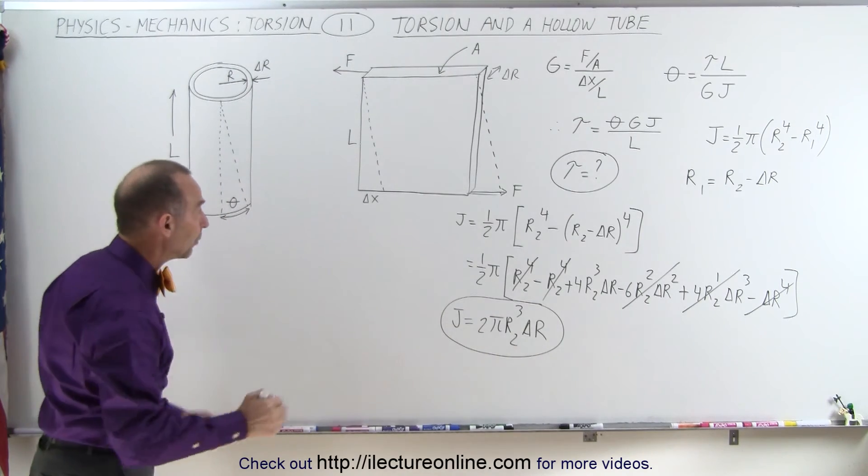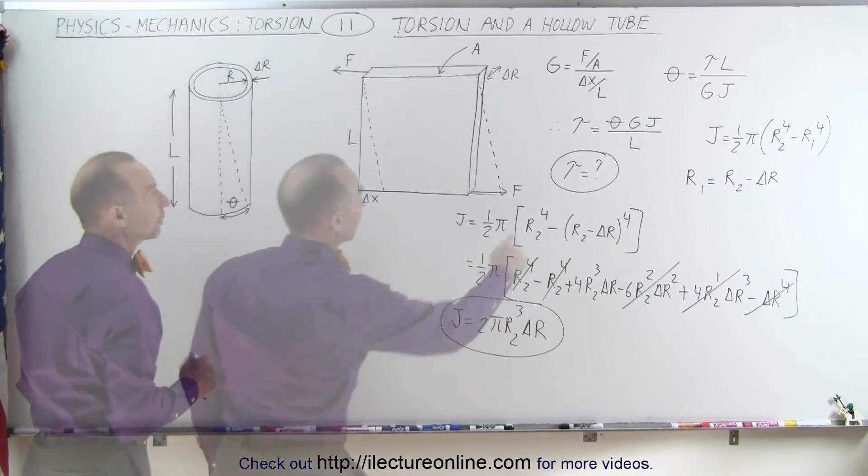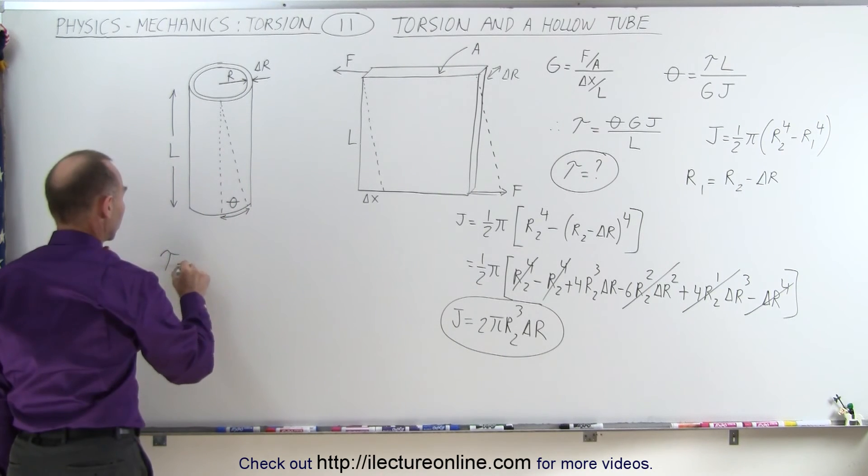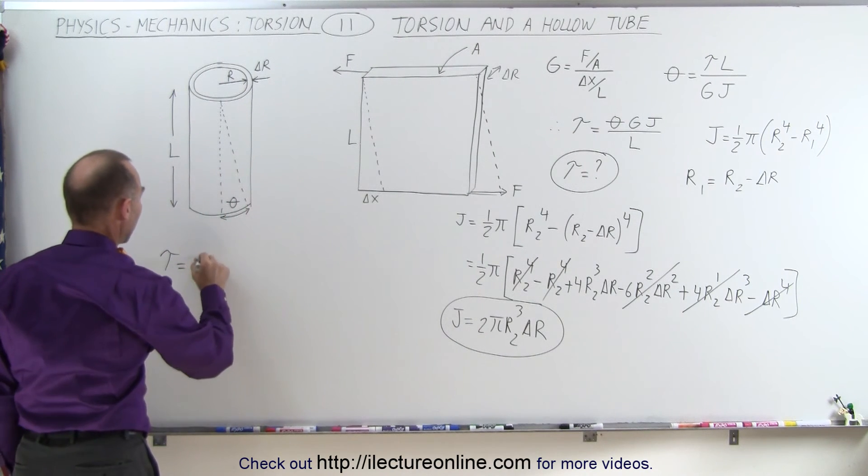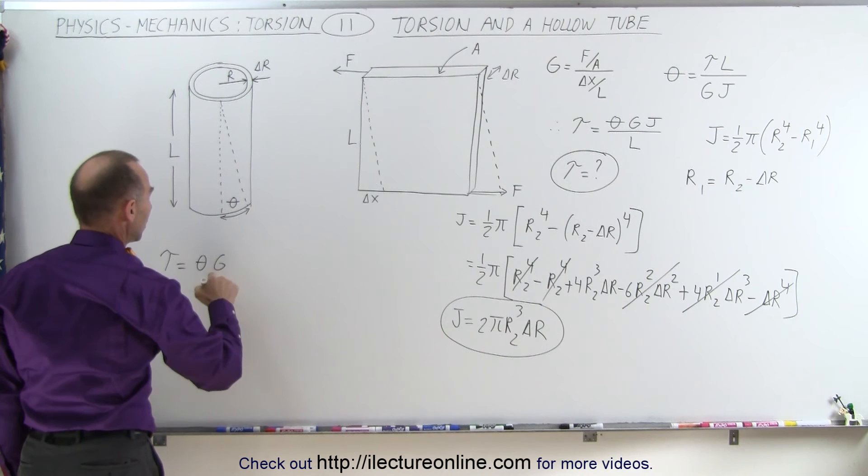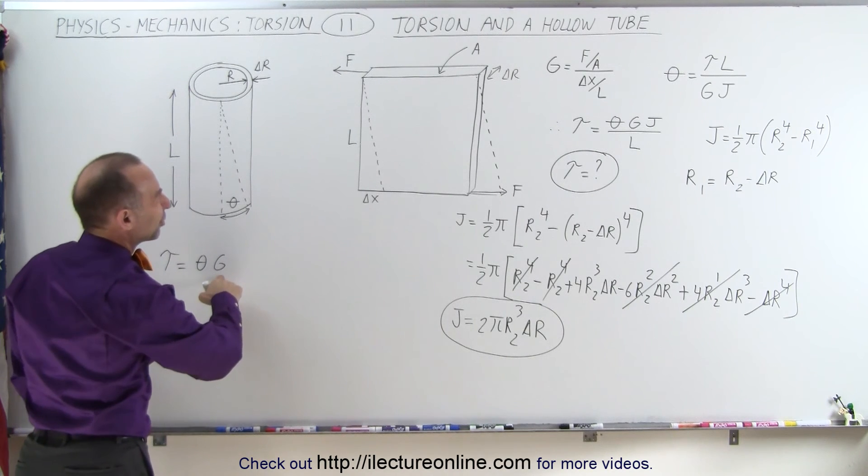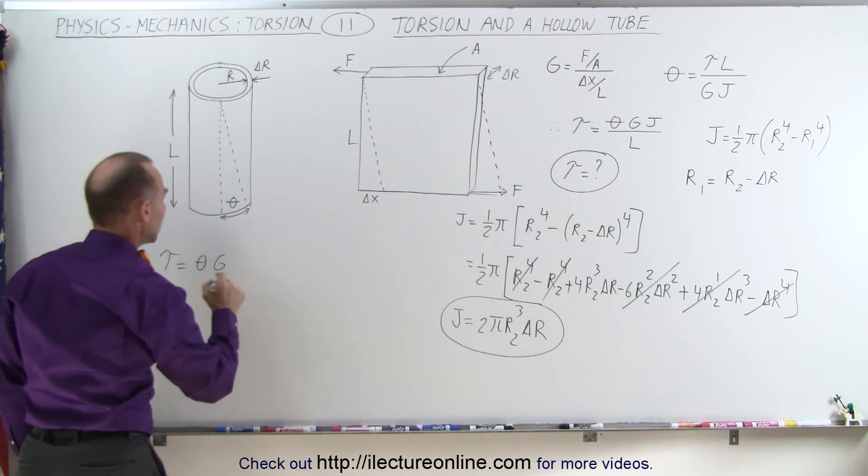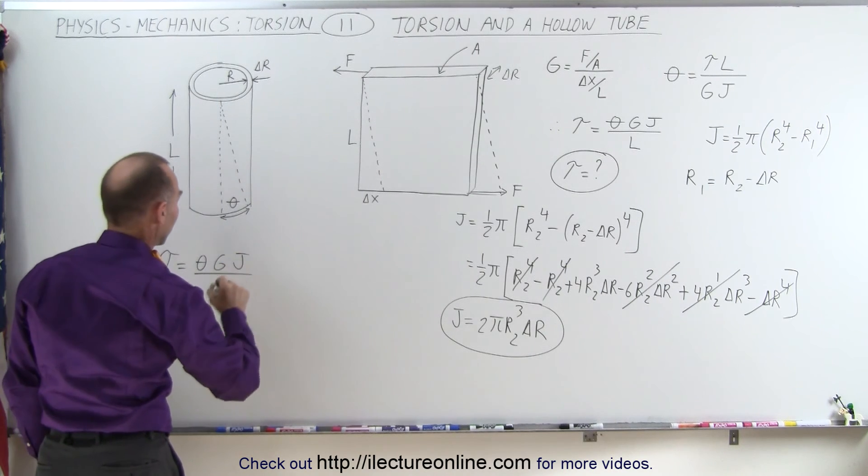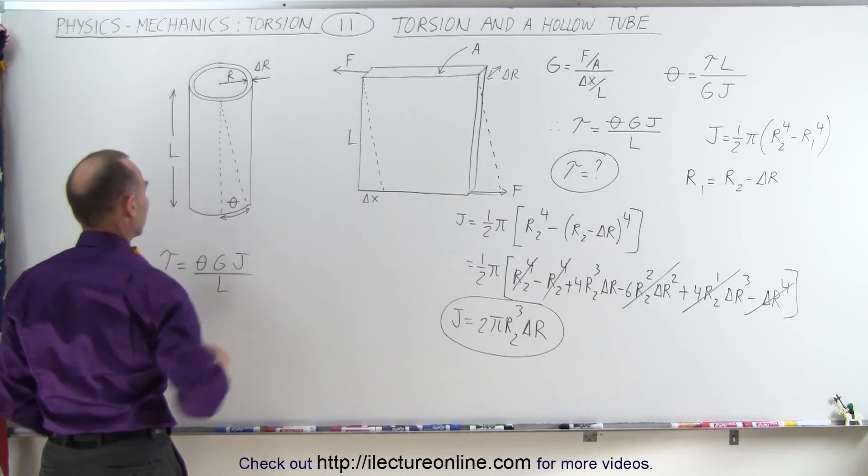Now finally, we can then plug that into our torque equation right there. The torque is equal to the angle times g, which is the shear modulus or the modulus of rigidity, times j, the torsional constant, divided by L, which would be the height of the tube.